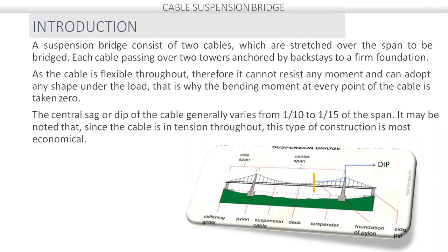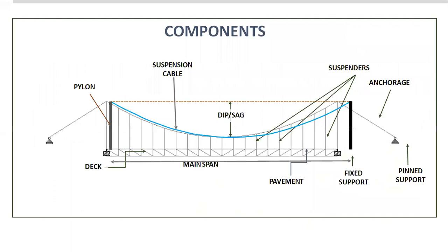Therefore, it cannot resist any moment and can adapt any shape under the load. That is why the bending moment at every point of the cable is zero. The sag or dip of cable generally varies from 1/10 to 1/15 of the span. You can see in this sketch the sag or dip of cable varies from 1/10 to 1/15 of the span of the bridge.